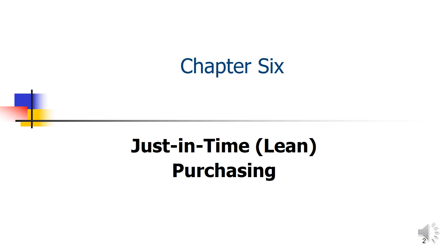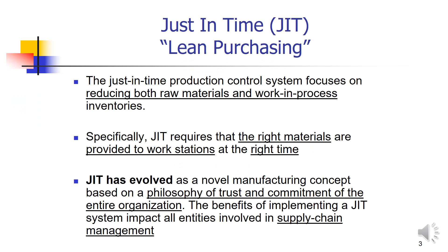Just In Time, which we sometimes call lean purchasing, is a production control system focused on reducing both raw materials and work-in-process inventory. The smaller the order, the better the system will be. Just In Time requires that the right materials are provided to workstations at the right time — that is the definition of Just In Time. So we receive the material on time in order to keep the process running.